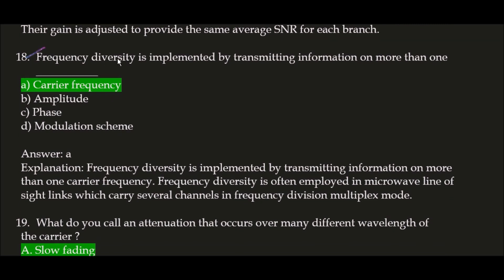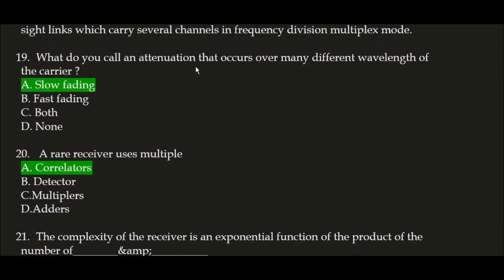Next question: frequency diversity is implemented by transmitting information on more than one blank space carrier frequency. The correct answer is option A, carrier frequency. Frequency diversity is implemented by transmitting information on more than one carrier frequency, and it is often employed in microwave line-of-sight links which carry several channels in frequency division multiplex mode. Next question: what do you call an attenuation that occurs over many different wavelengths of the carrier? The correct answer is option A, slow fading.